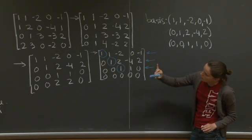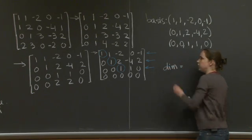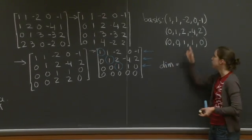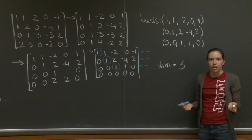The other question that we had was, what is the dimension of the vector space? Well, this is the easy part. The dimension of the vector space is 1, 2, 3.